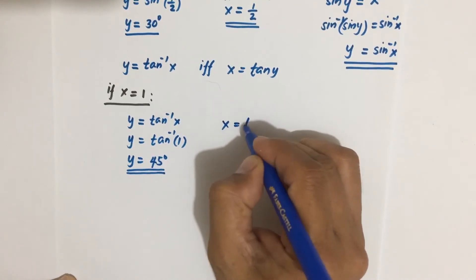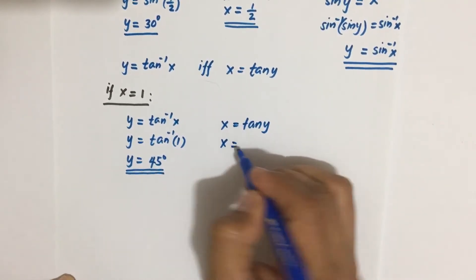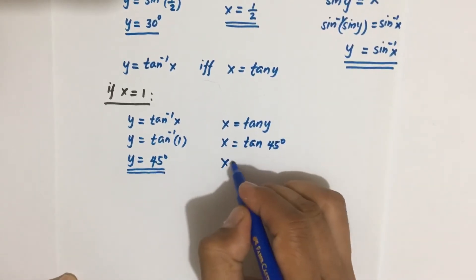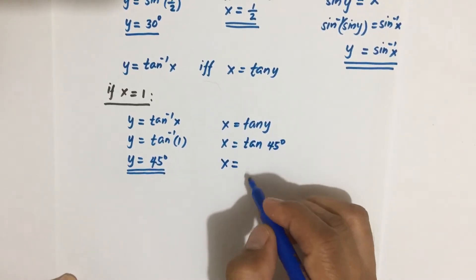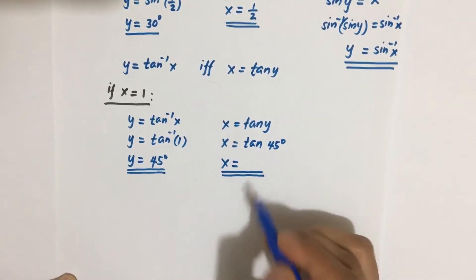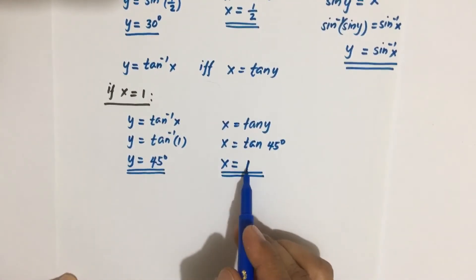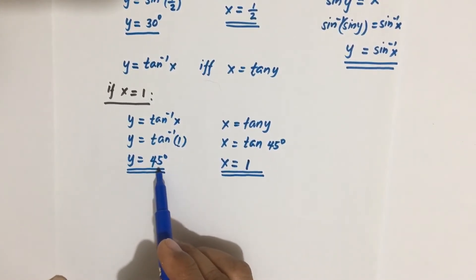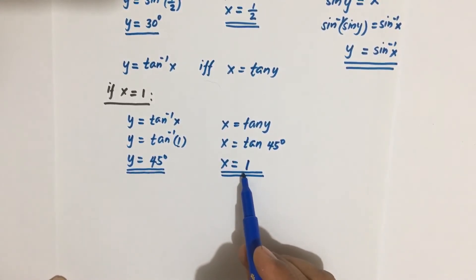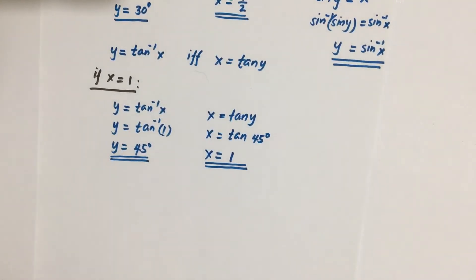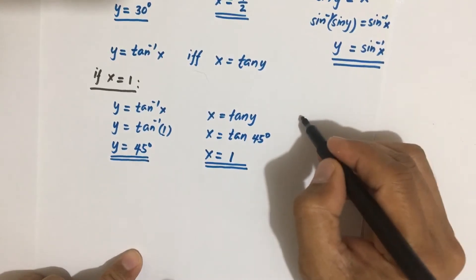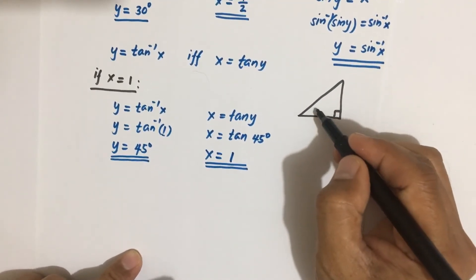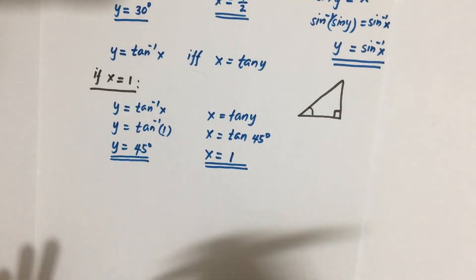So the condition: x equal to tangent y. Let us check — is tangent y equal to x? Our y here is 45 degrees. Tangent of 45 degrees is equal to 1. Using your calculator, tangent of 45 is equal to 1. So we let x equal to 1, we get inverse tangent of 1 equal to 45, and then taking tangent of 45 gives you 1 — so they're inverses. Now using the 45-degree angle, let this be our angle y in the triangle.